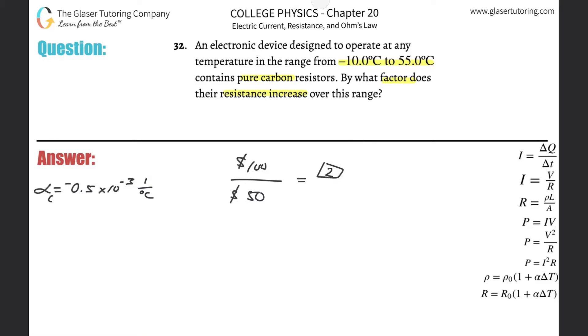So that's the idea. Now carbon, it says by what factor does their resistance increase over this range? So we can do this in a couple of ways. Knowing that we're dealing with carbon, if we look at its coefficient, its temperature coefficient, the alpha value, notice how it's negative. So what does that imply?